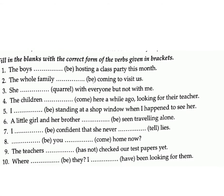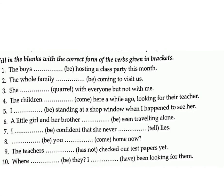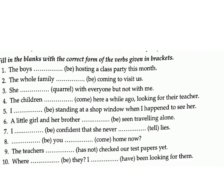Question 6: A little girl and her brother ___ (be) seen travelling alone. Answer: have been. Question 7: I ___ (be) confident that she never ___ (tell) lies. Answer: am; tells.